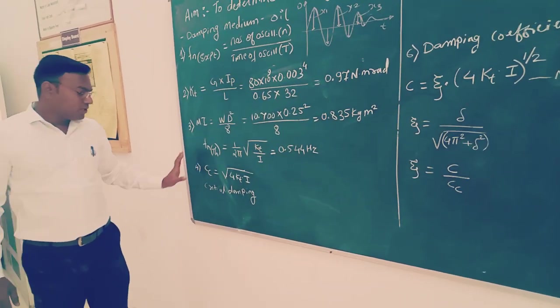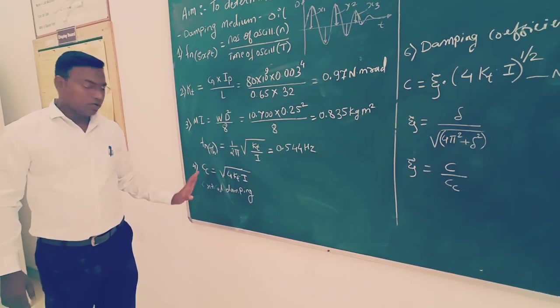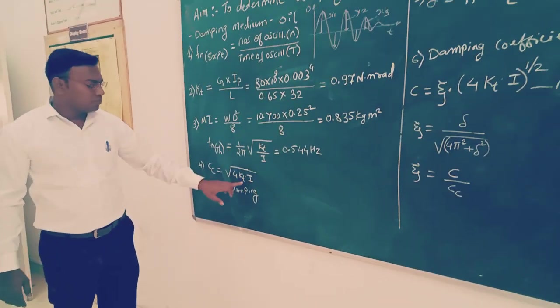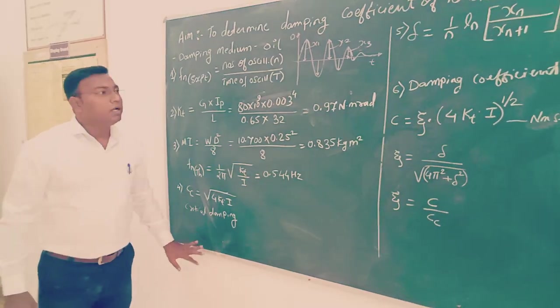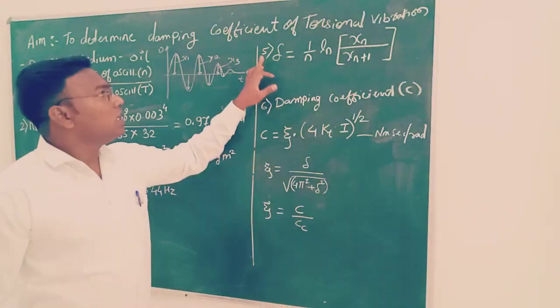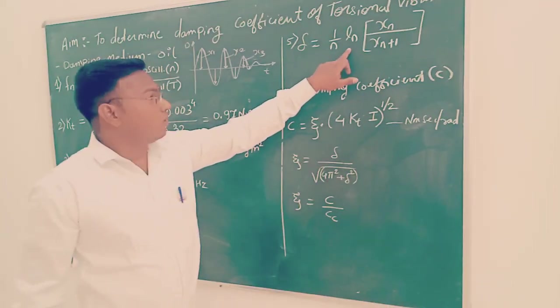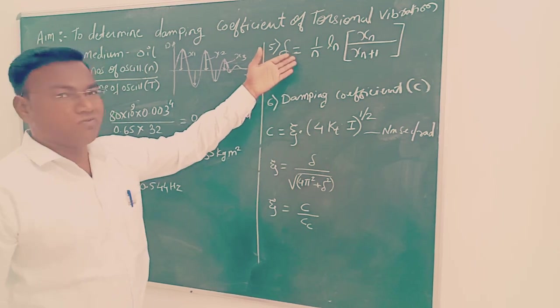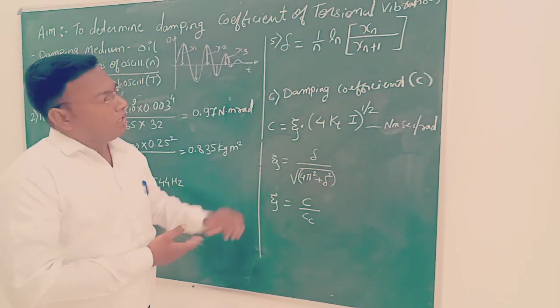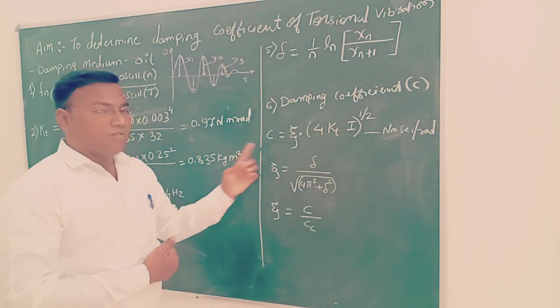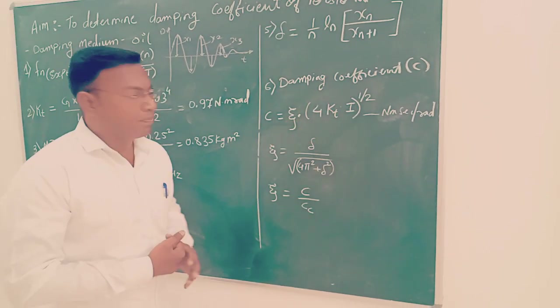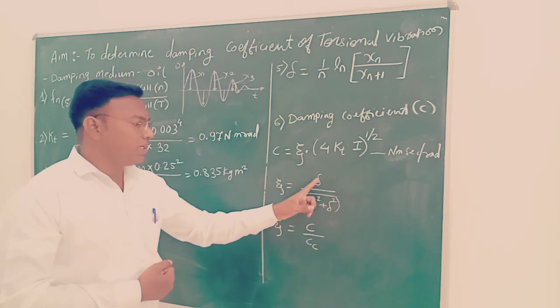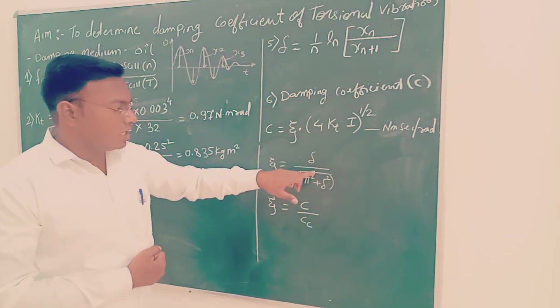Critical damping coefficient Cc is 2 times square root of KT times I. Logarithmic decrement delta is ln(xn/xn+1). The damping coefficient is our experiment aim. C = ζ times 4πI, where ζ is the damping ratio C/Cc. We can determine ζ as delta divided by square root of 4π² plus delta². Substitute that value to determine ζ, then substitute in this equation to determine C, which is the damping coefficient.